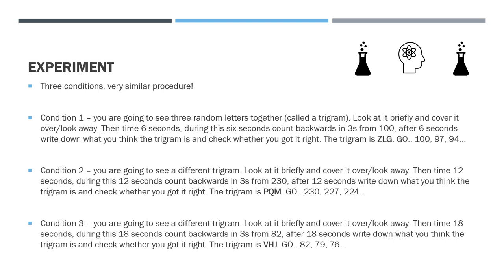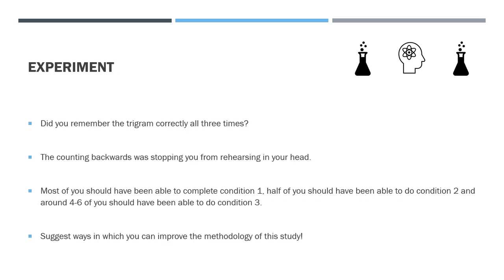That one should have been a lot more difficult. Three out of three - well done, and if you're doing it properly that was very difficult. Condition three was hard because counting backwards was stopping you rehearsing - that's how we test the duration of short-term memory. As a statistic: I teach 34 of you. Most should complete condition one (28-30 of you), half should manage condition two (about 17), and only four to six should have got condition three right.